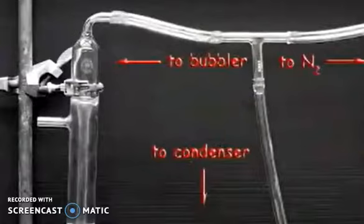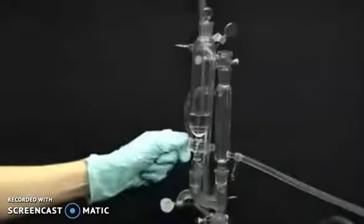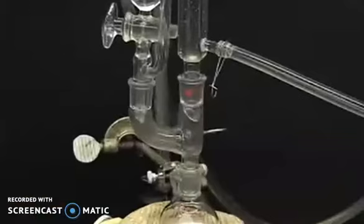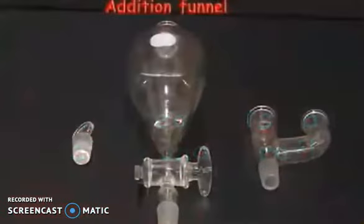Connect a two-bulb tube to the condenser at the top. Connect the other arm of the connector to a nitrogen source and bubbler. Reagents may be added while the reflux is occurring.